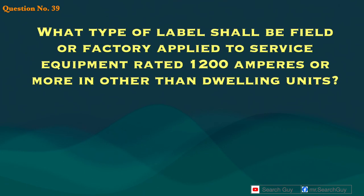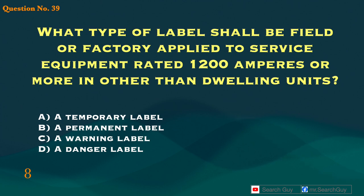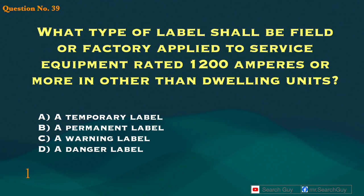Question 39. Rated 1200 amperes or more in other than dwelling units. What type of label is required? A. Temporary label. B. Permanent label. C. Warning label. D. Danger label. Answer: B. A permanent label.